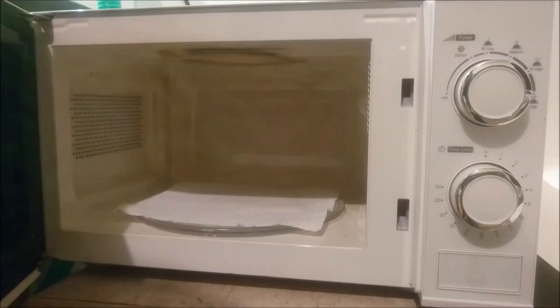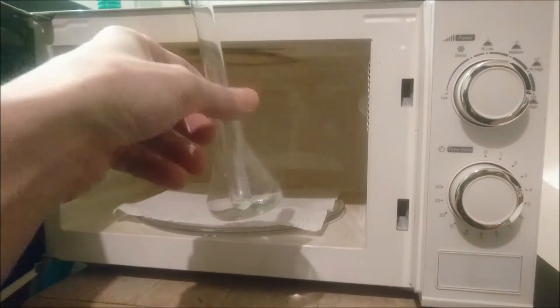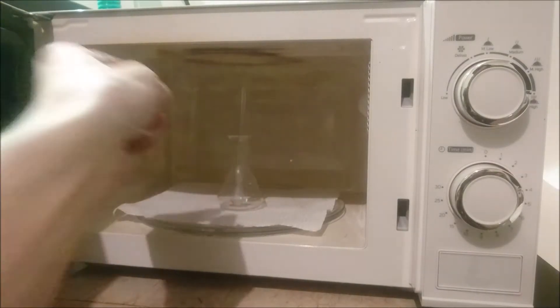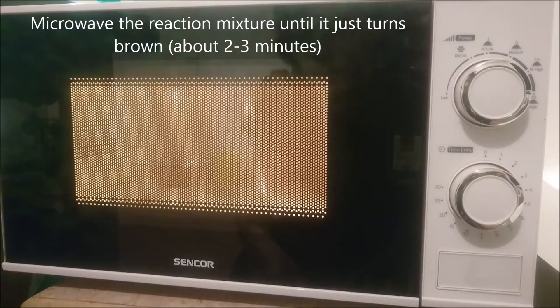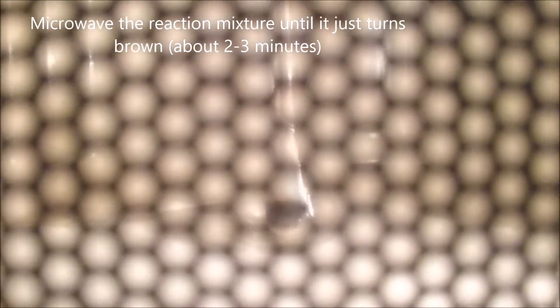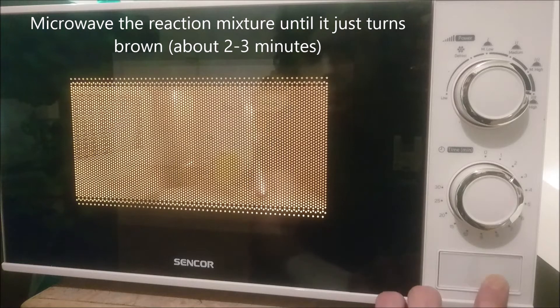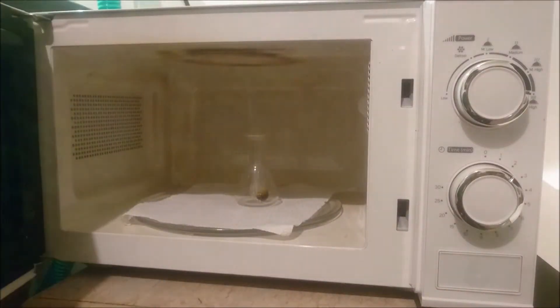Place the reaction mixture in a household microwave oven and heat on full power. The mixture will froth a little and gradually turn darker. Stop the heating when the mixture is dark brown and the frothing mostly subsided. This usually takes about 2-3 minutes.